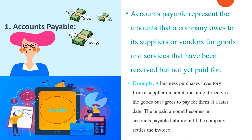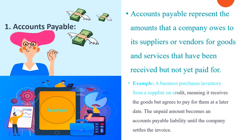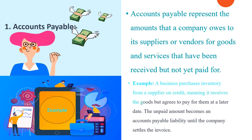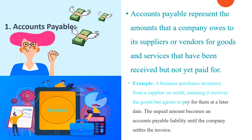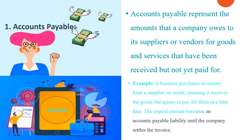Example. A business purchases inventory from a supplier on credit — meaning it receives the goods but agrees to pay for them at a later date. The unpaid amount becomes an accounts payable liability until the company settles the invoice.